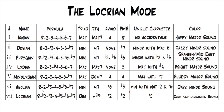Now we've totally filled out this chart. We've added the Locrian mode: root, flat 2, flat 3, 4, flat 5, flat 6, flat 7. It's only one note different from Phrygian, which has a perfect 5th — you just lower that to the flat 5. Compared to Ionian, you're flatting everything except the 4th. It's the only mode that creates a diminished triad and a minor 7 flat 5, so it's very unique. The avoid note is the flat 2 because it's only a minor second away from the root — very dissonant — but that doesn't mean don't play it; it just means not to land and stay on it.